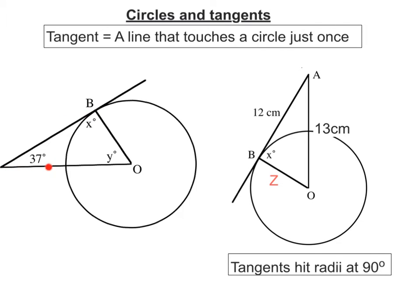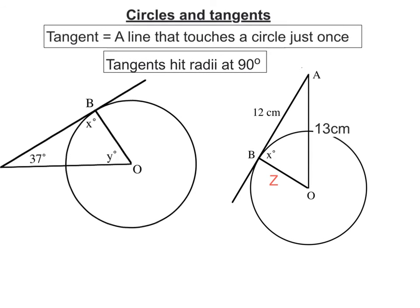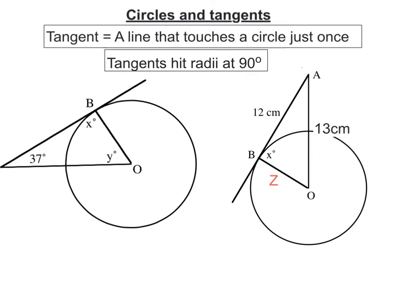This line, if I extend it, would actually touch twice. Similarly, this is a tangent because it only just touches the circle, whereas this other line here would touch twice if I expanded it. And when you have tangents, they hit a radius — the plural for radius is radii — at 90 degrees. For instance, that there is a right angle.